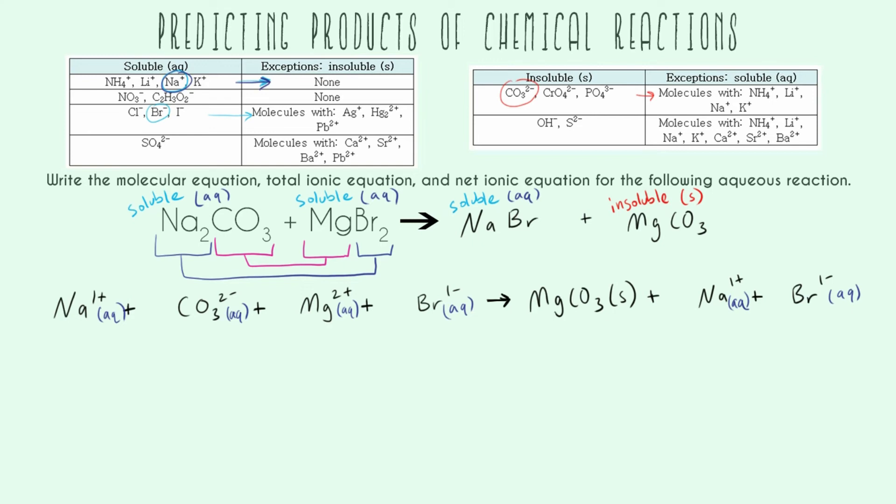And the last thing we can do is to go ahead and actually balance both these reactions. So starting with our molecular equation, I'm going to go ahead, put a 2 here to get me 2 sodiums. Now my sodiums are balanced, my bromines are balanced, and it turns out that my carbonate and my magnesium are already balanced with 1.